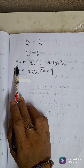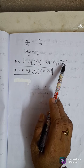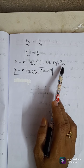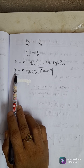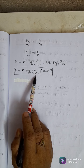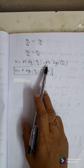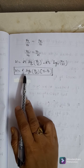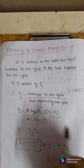Substituting V3/V4 = V2/V1 into the work equation W = R·T1·log(V2/V1) − R·T2·log(V2/V1), both terms share the factor R·log(V2/V1). Taking it common, the final work done equation for the Carnot engine is W = R·log(V2/V1)·(T1 − T2).